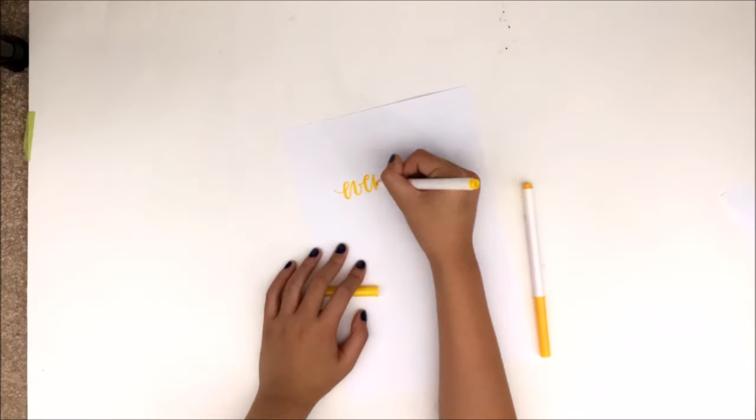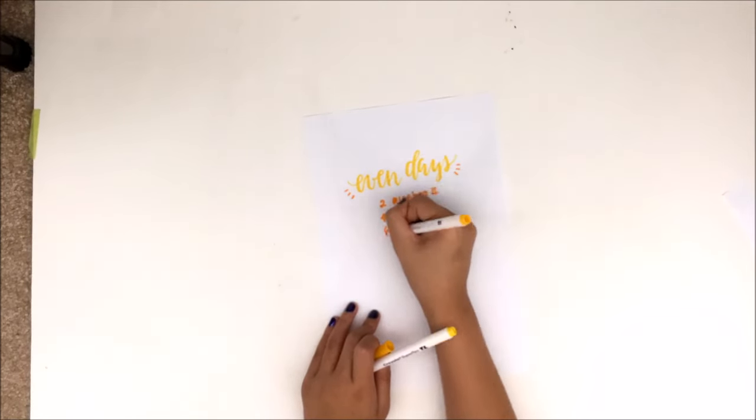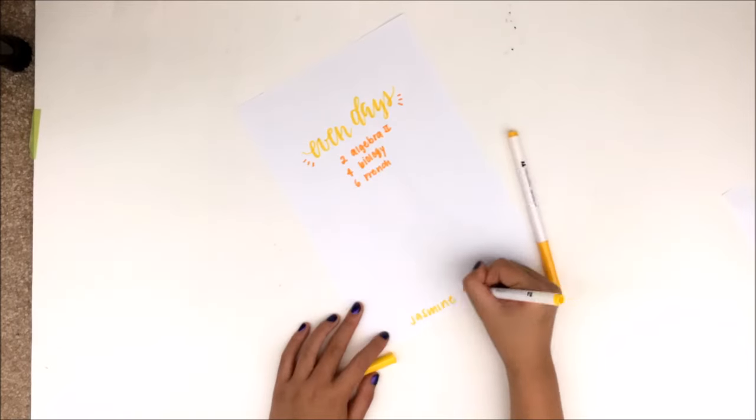A sheet of paper to decorate the front of your binder is also helpful. It doesn't have to be too fancy. Just make sure it has the labels for what's inside and your name in case you forget it somewhere.